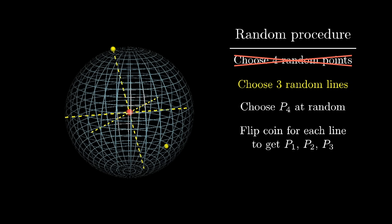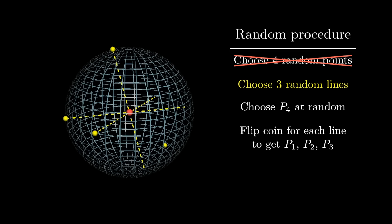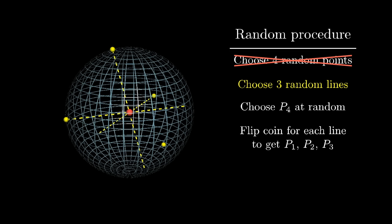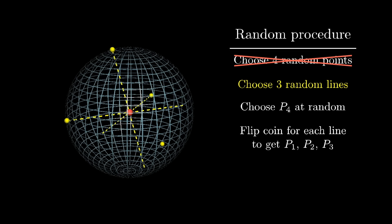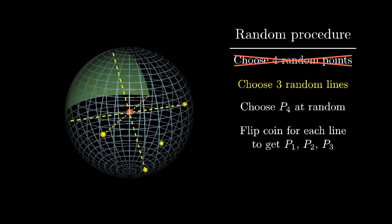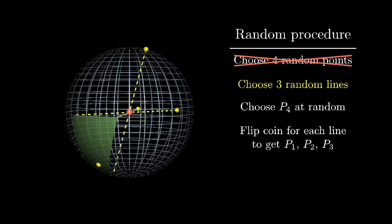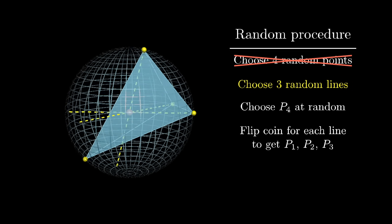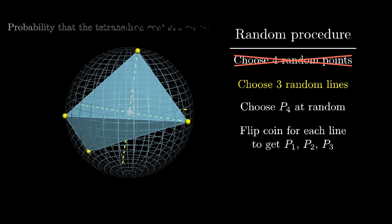That first line passes through the sphere at two points, so flip a coin to decide which of those two points is going to be p1. Likewise, for each of the other lines, flip a coin to decide where p2 and p3 end up. Now there's eight equally likely outcomes of those coin flips, but one and only one of them is going to place p1, p2, and p3 on the opposite side of the center as p4. So one and only one of these eight equally likely outcomes gives us a tetrahedron that contains the center.